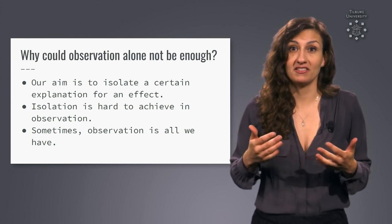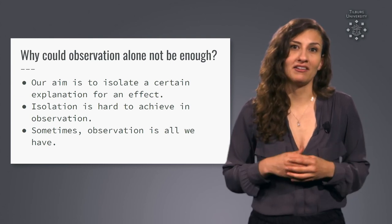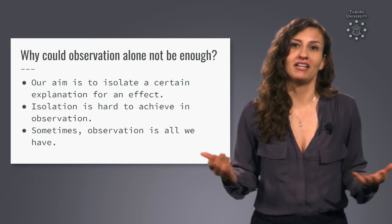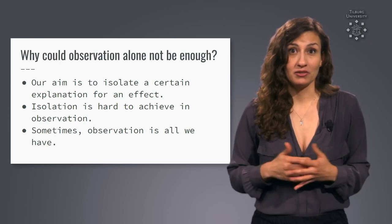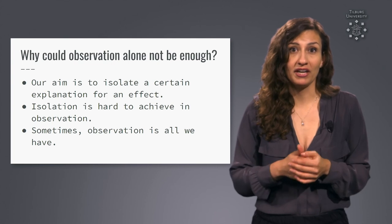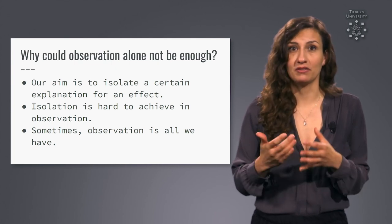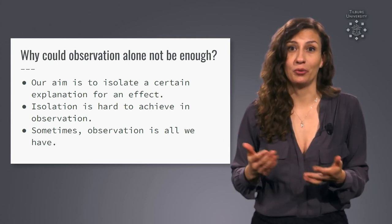Nevertheless there are things that you simply cannot do in an experiment. For instance you can't assign people to different gender or to different nationalities or personality traits at the snap of your finger. To study such categories we therefore have to rely on naturally occurring variation and we cannot quite run an experiment.